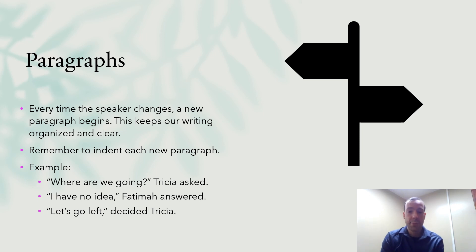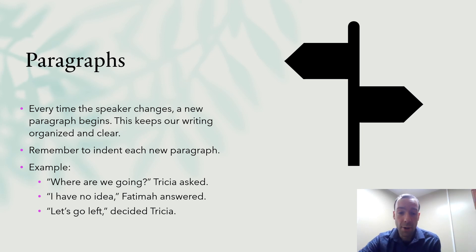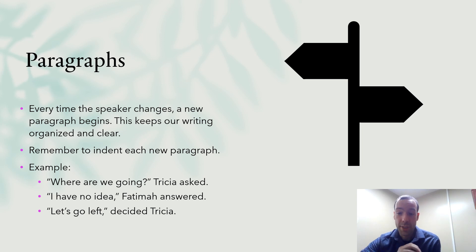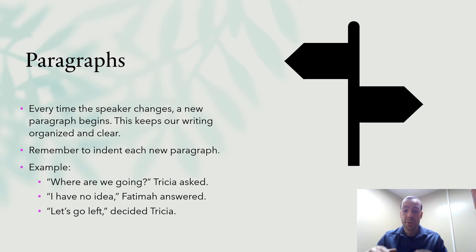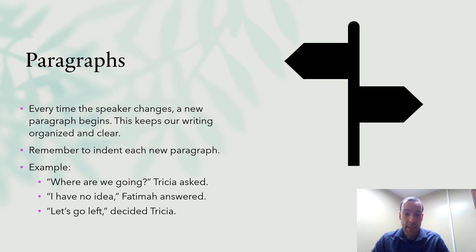For example: 'Where are we going?' Trisha asked. 'I have no idea,' Fatma answered. 'Let's go left,' decided Trisha. Notice that every time there's someone talking, we have quotation marks at the start and at the end of what they're saying. There's a full sentence inside — it starts with a capital letter and it has end punctuation at the end, just like a sentence would by itself.